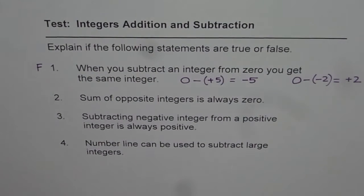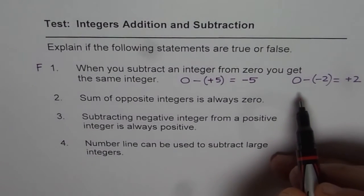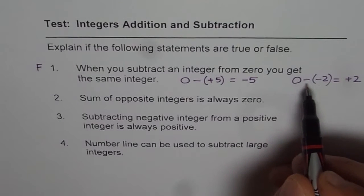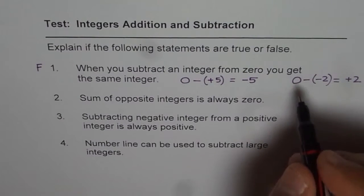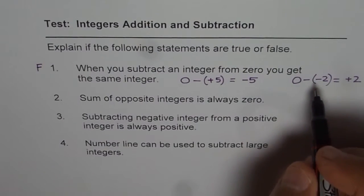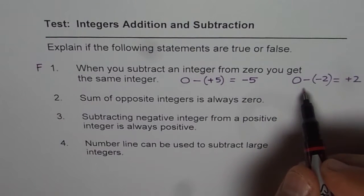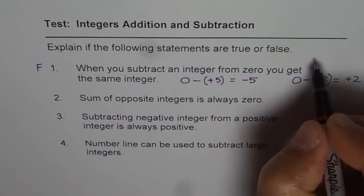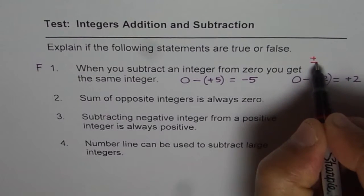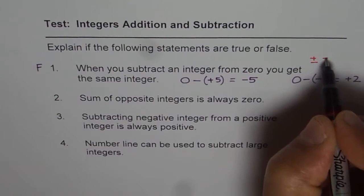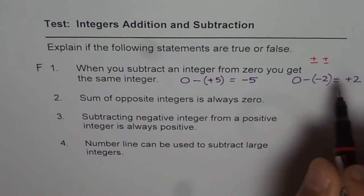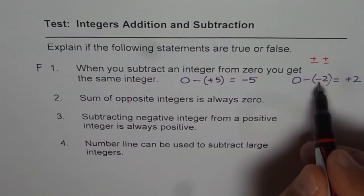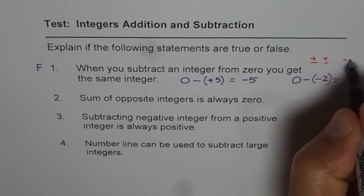Now, what you can also do is, you can use one of the methods learned to do this subtraction. 0 take away minus 2. So, 0 could be written as combination of 0's. We can write plus and minus. That is one set. And then plus and minus another set. And from this set, we have to take away 2. 2 negatives. 2 negatives.